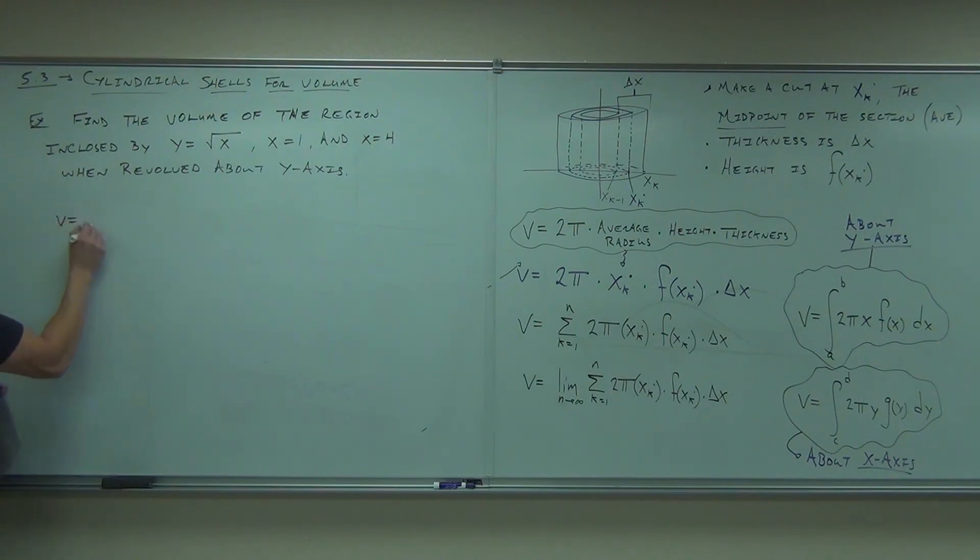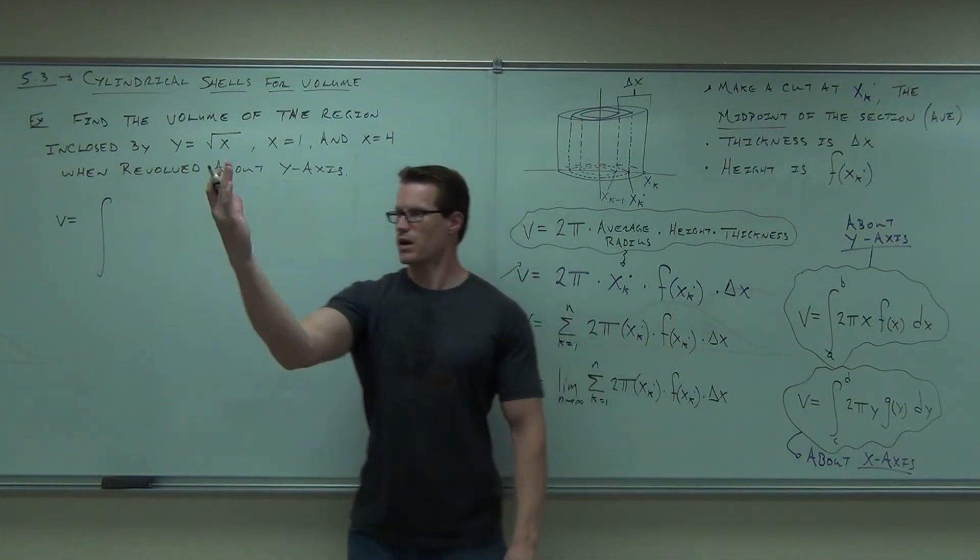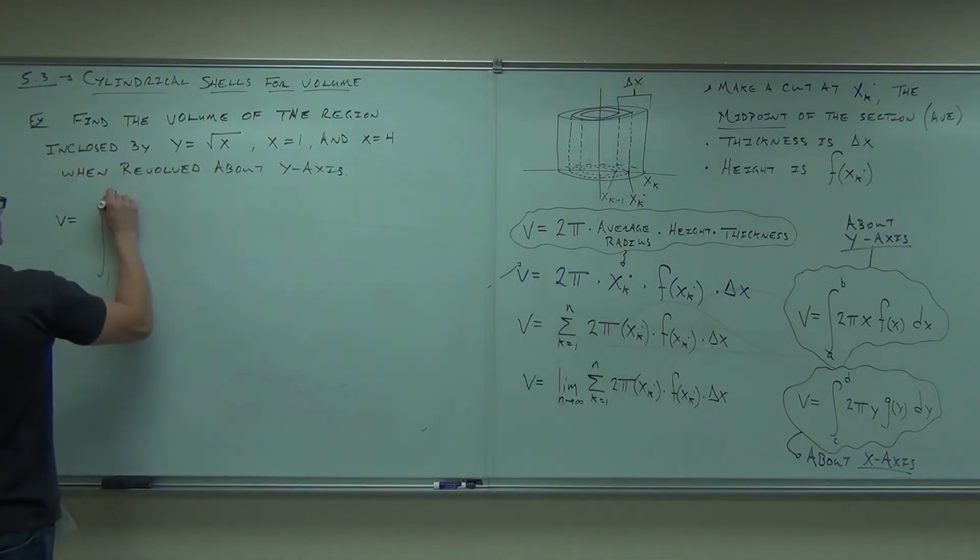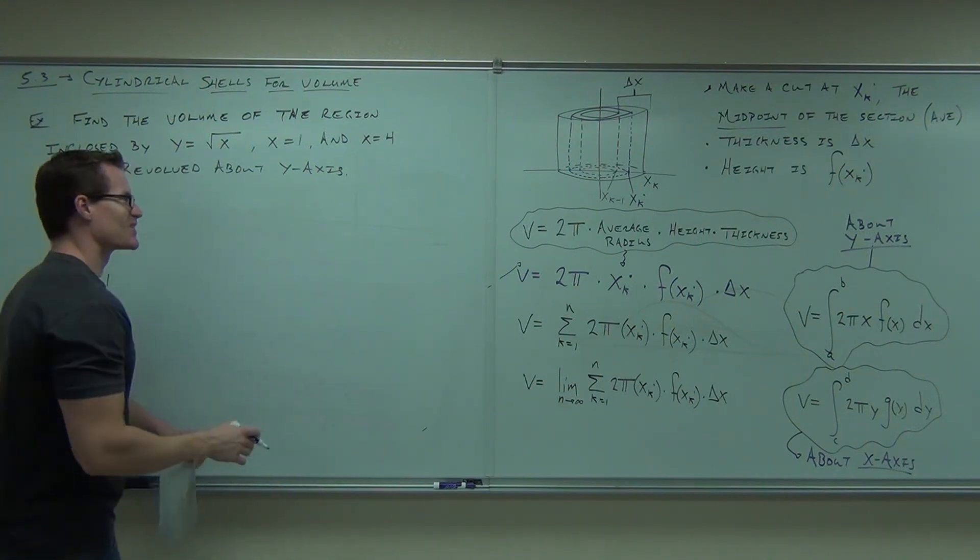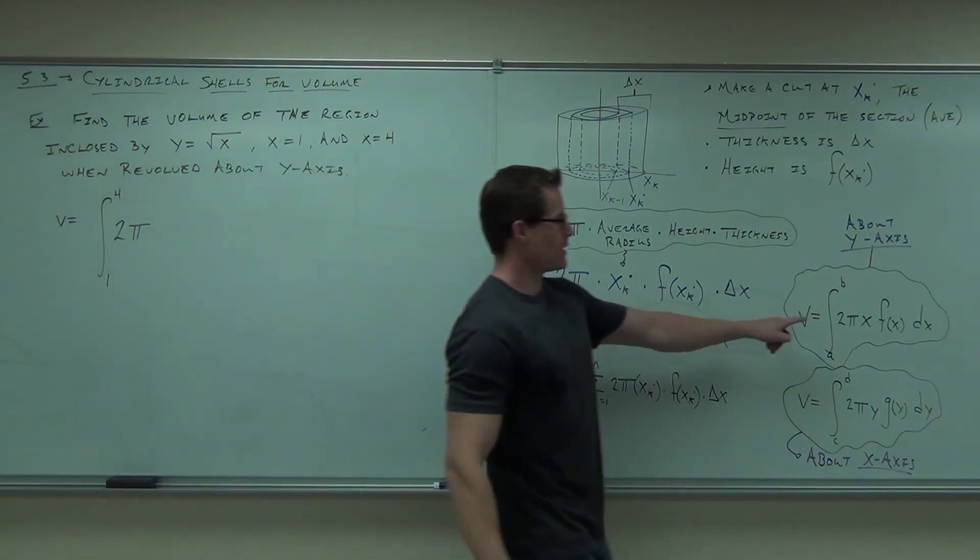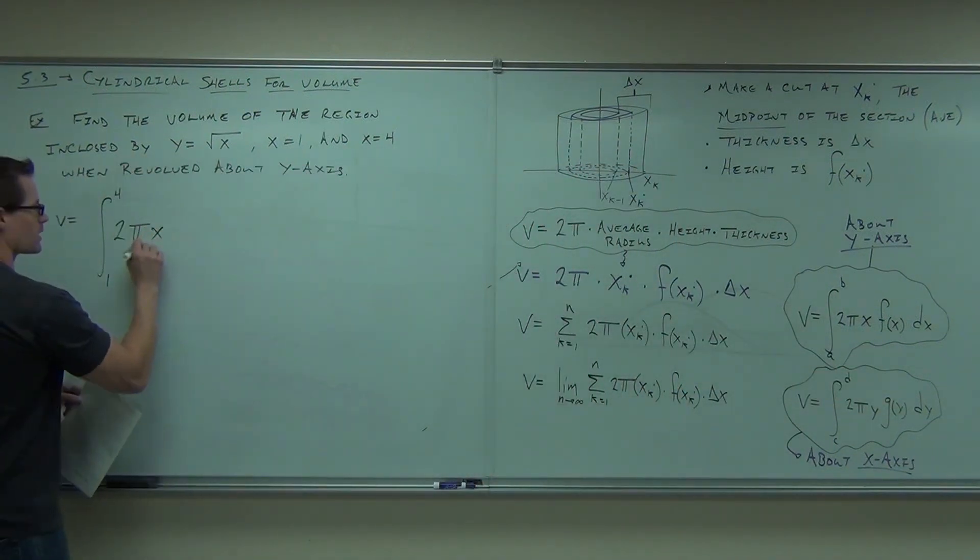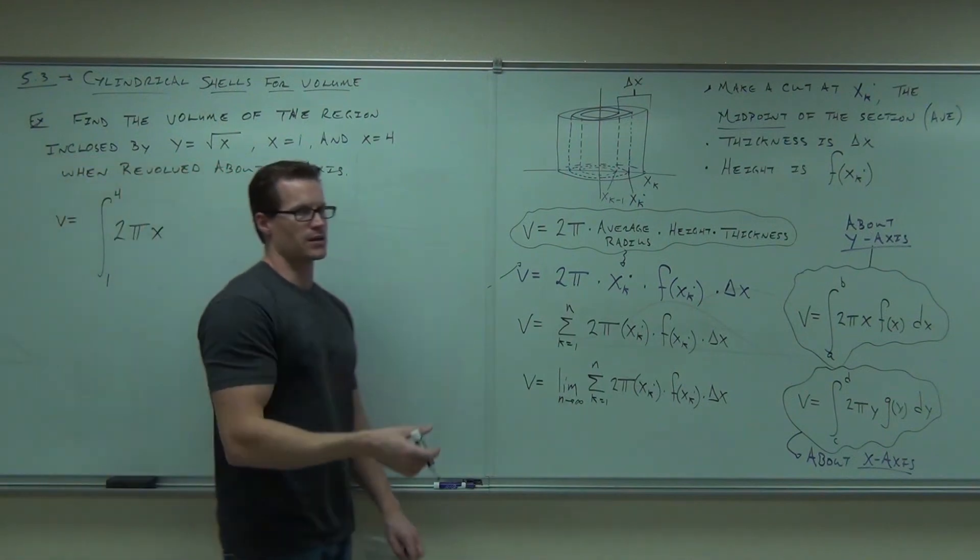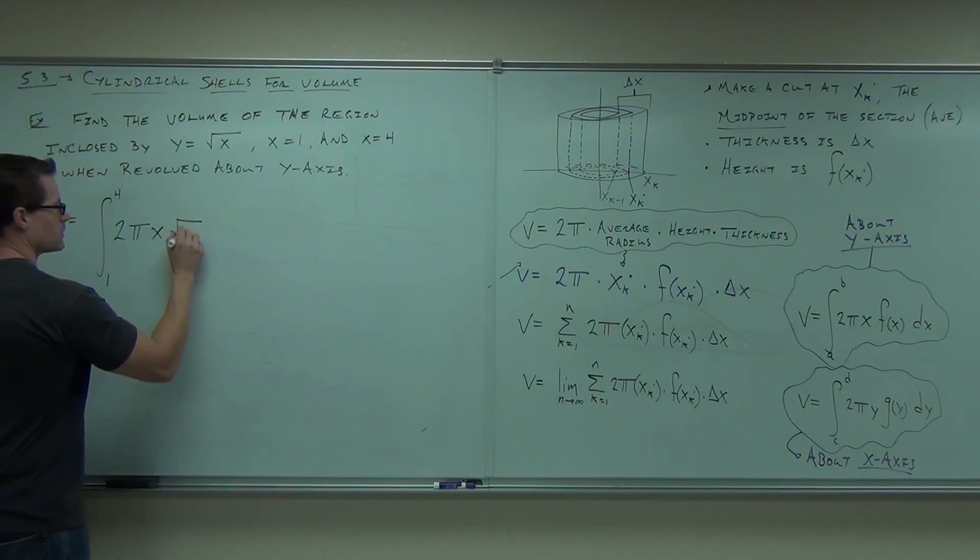Here's what this says to do. The volume is integral from, where do we start? One, four. X equals one. It's going to be a line. We're going around. One to four. You're clapping for me. We're good. What goes inside? Two pi. Two pi. Look at what happens. Look at what it says. It says x. No matter what, you're going to have an x there. So you just tack on an x. Then it says f of x. What's f of x? Square root of x.